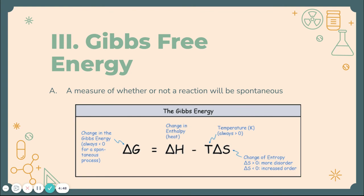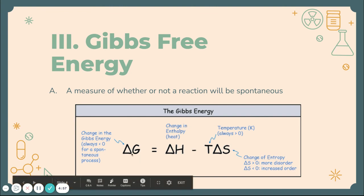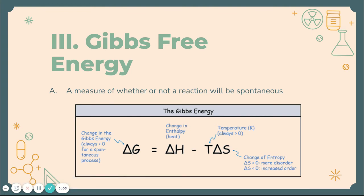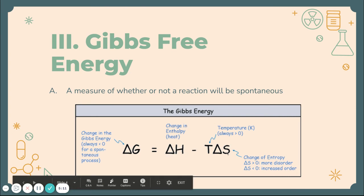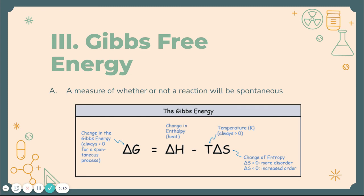Finally, we relate entropy and enthalpy in the Gibbs free energy equation. You're not going to have to calculate this — I just wanted you to see it and know what it stands for. Gibbs free energy is the equation that tells us whether a reaction will happen spontaneously or not. We compare the enthalpy — that's delta H — and the entropy — that's delta S — and T stands for temperature. We can perform this calculation and decide if a reaction is going to happen by itself, or if it needs some sort of catalyst to make it go.